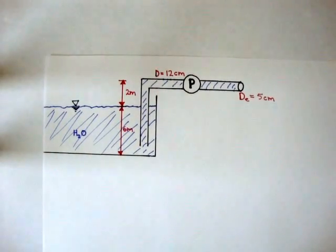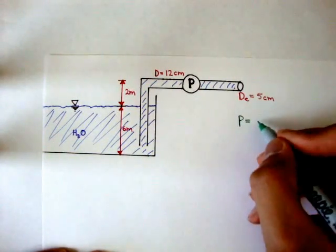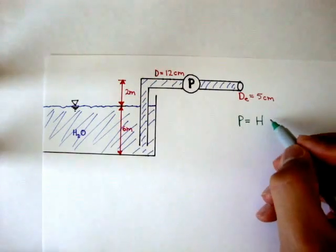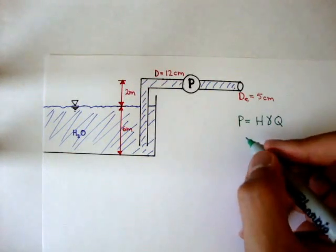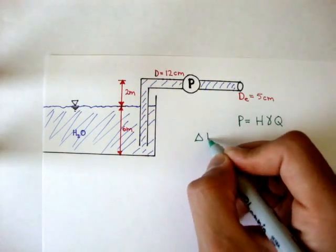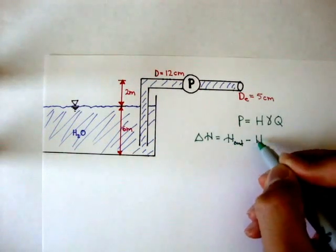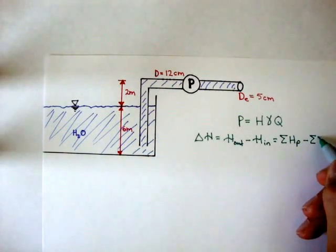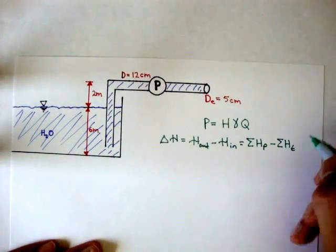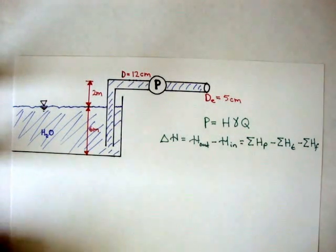Let's do another energy problem example. Remember from the last couple videos, we have two formulas we can use. We can use power equal to the device transfer head times the specific weight of the fluid times the volumetric flow rate. We've also learned that the change in total energy head — energy head out minus energy head in — equals the sum of all pump heads minus all turbine heads minus any losses due to friction.